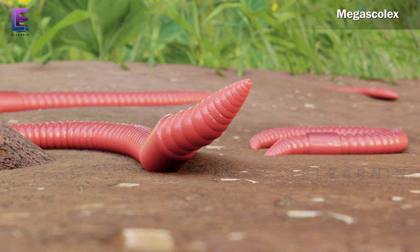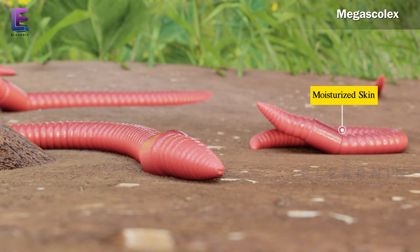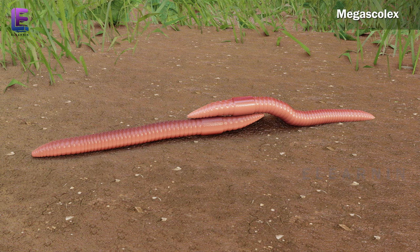Earthworms have setae for movement. In order to facilitate respiration through the skin, the body is kept moist at all times.